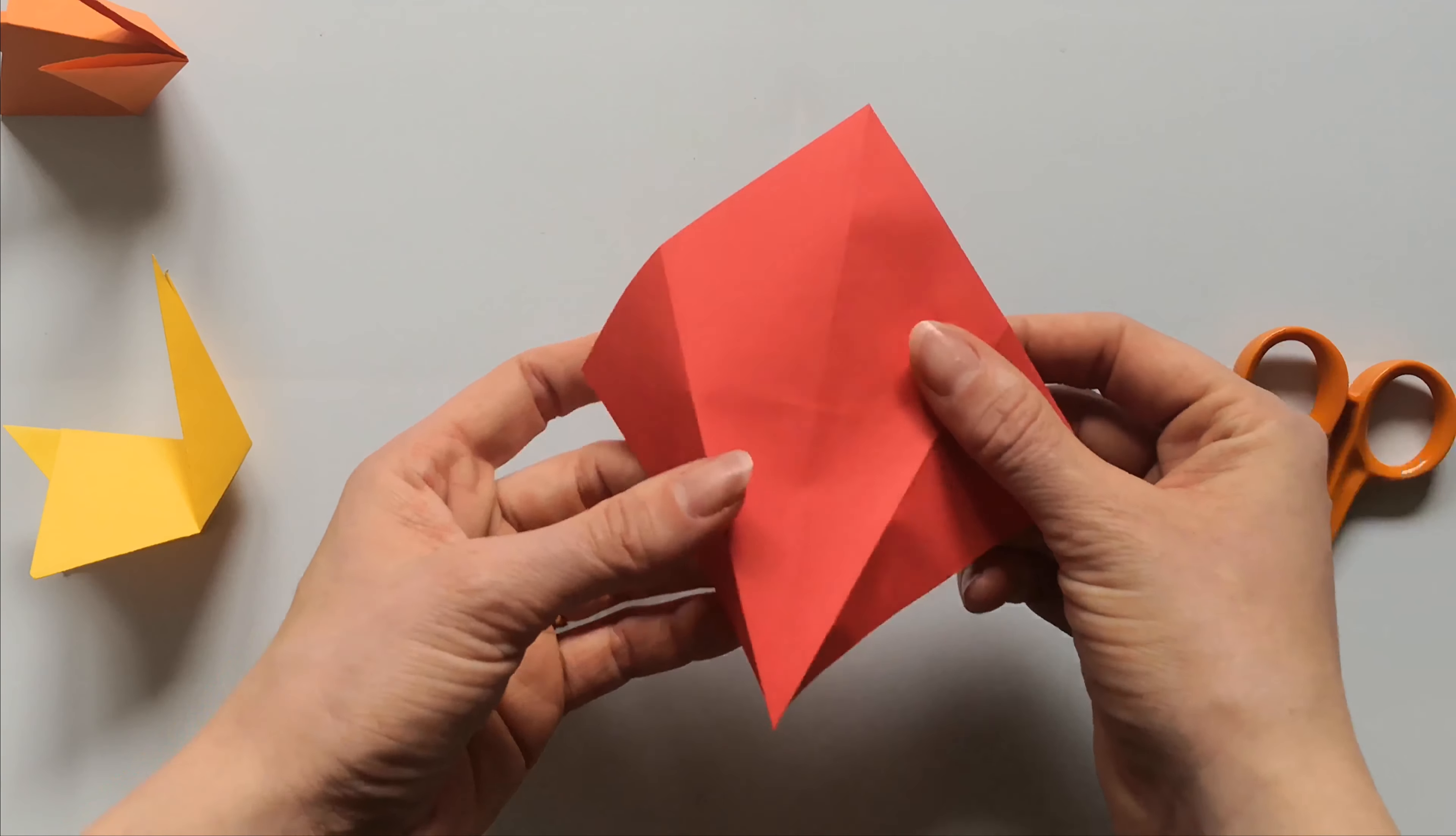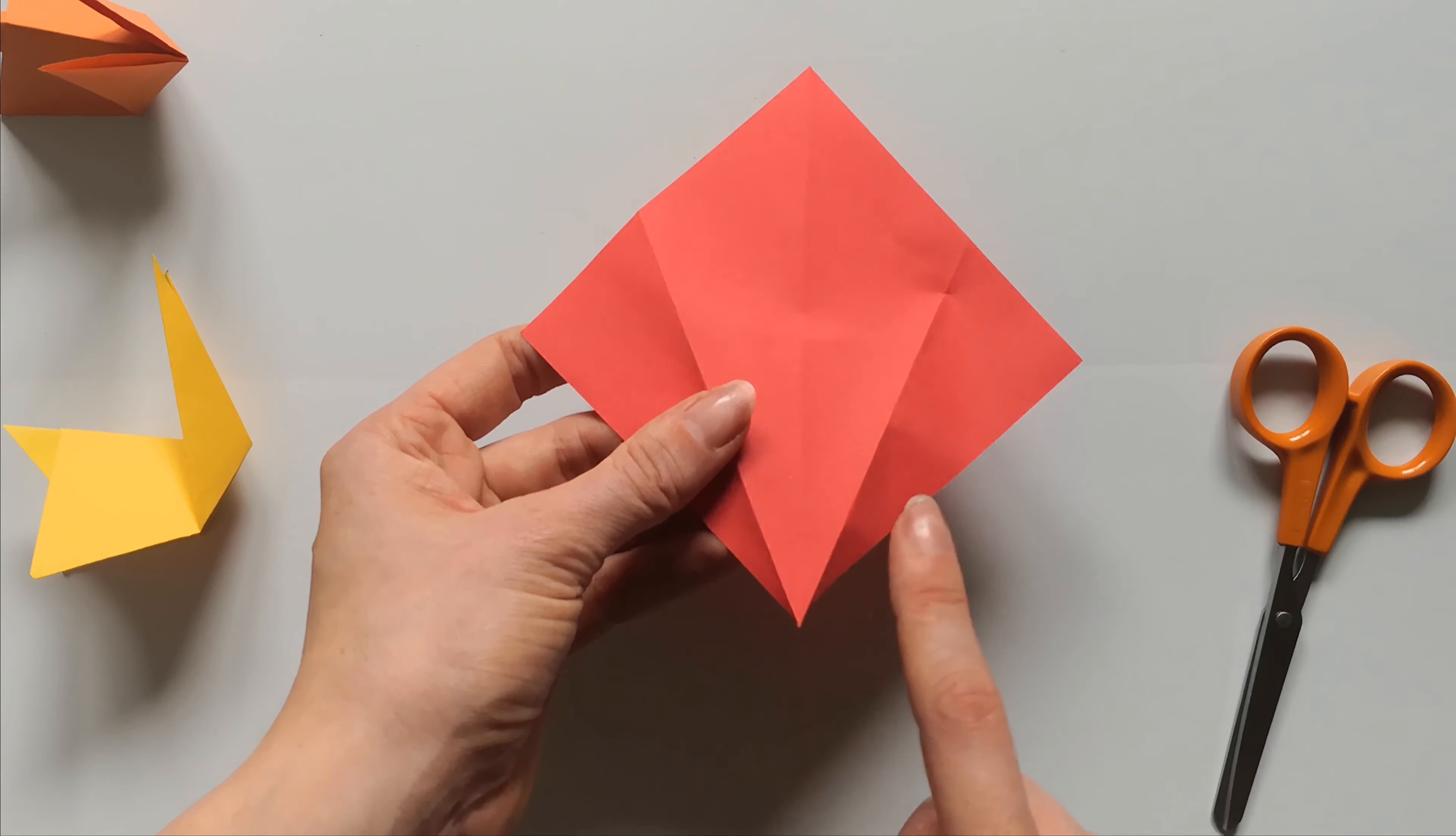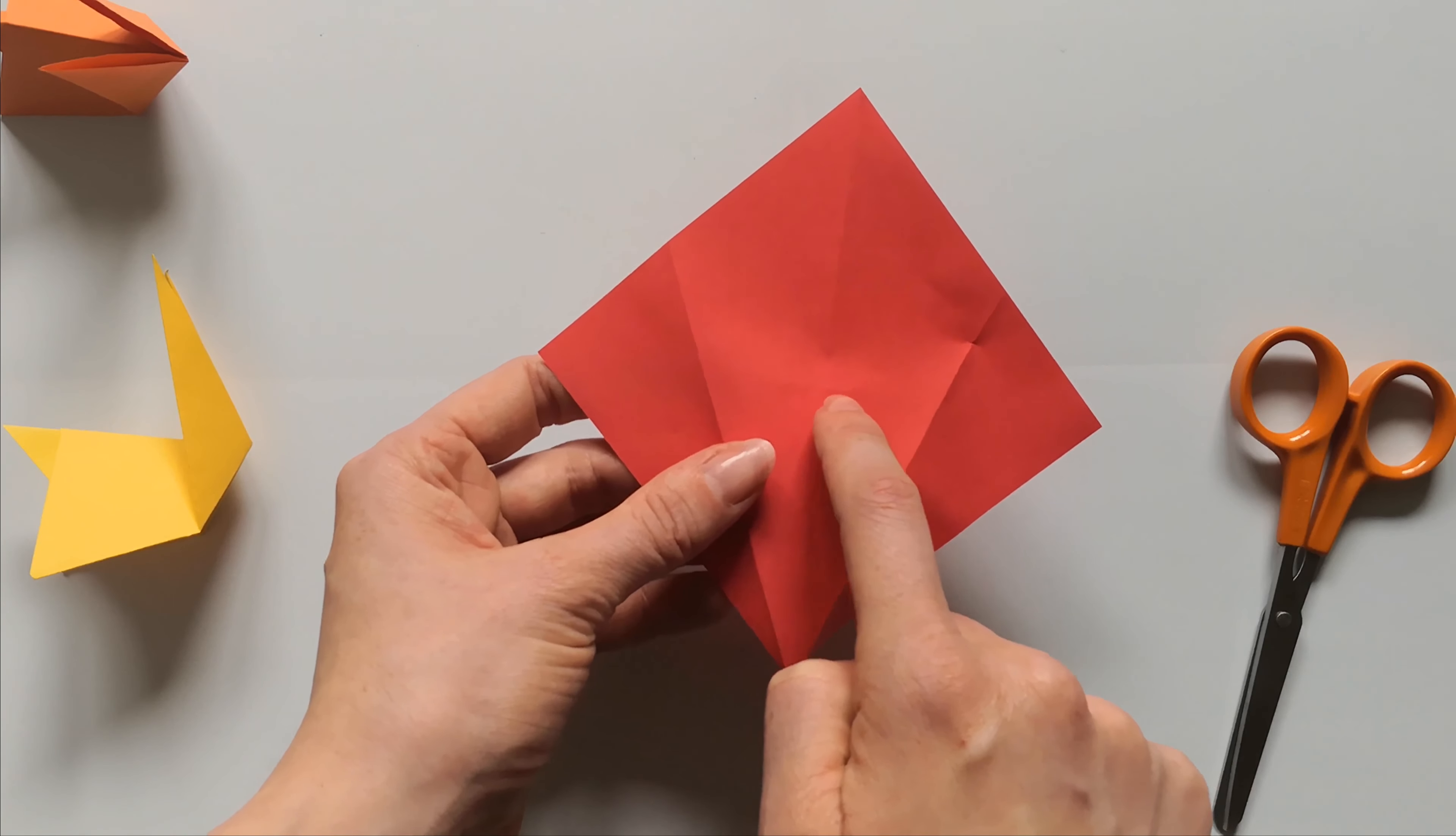Take your scissors and cut it from this corner, where all the lines start, to this middle crease of the paper.